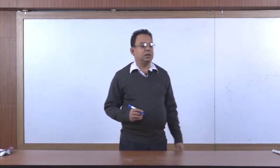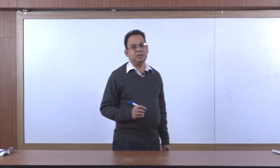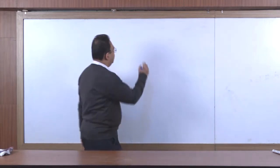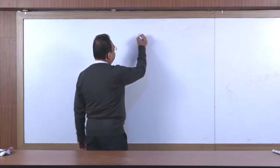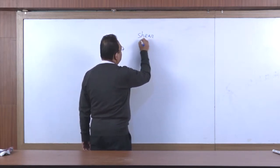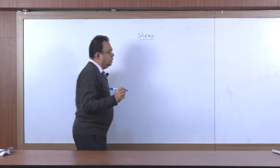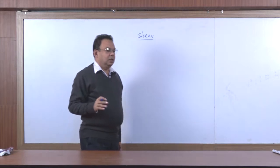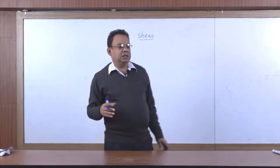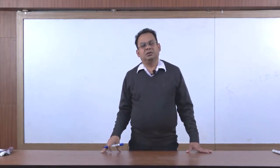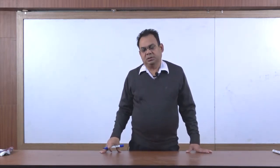Now, let us consider another basic transformation operation, that is shearing (CR). CR is basically distorting the shape of the object.